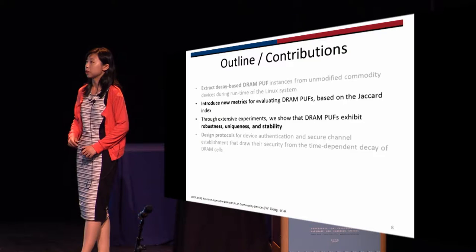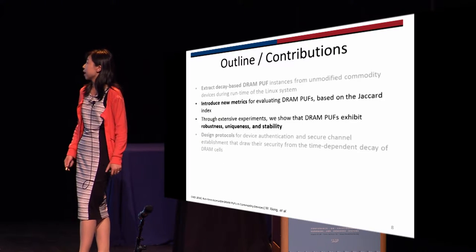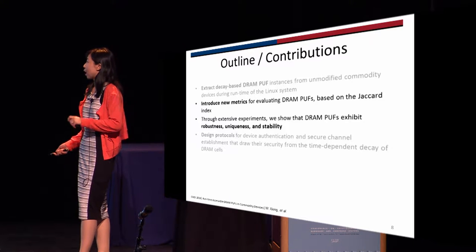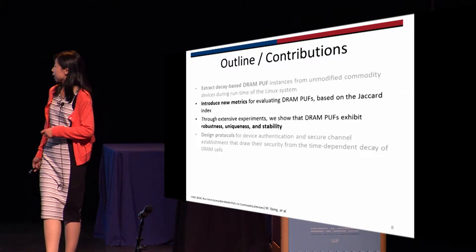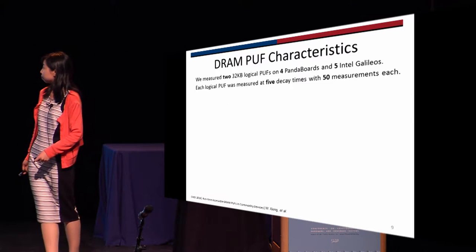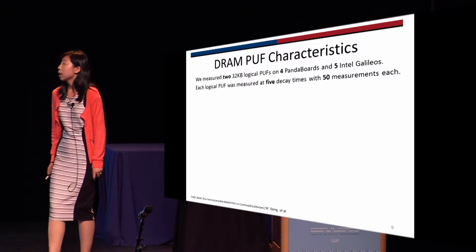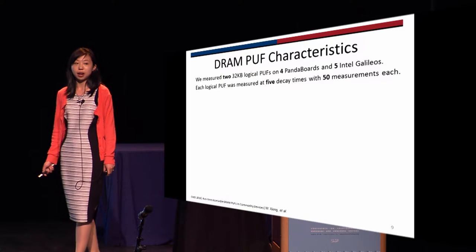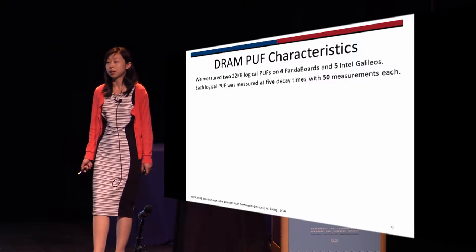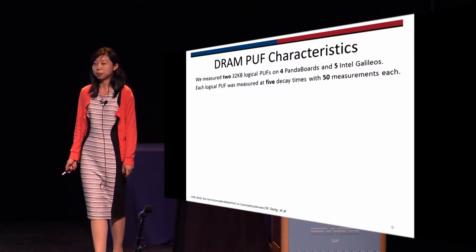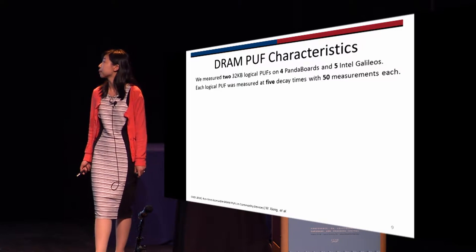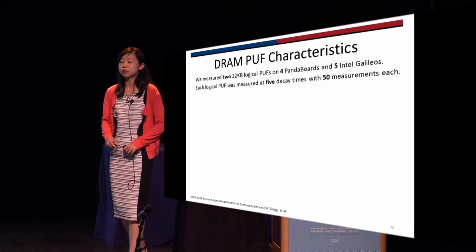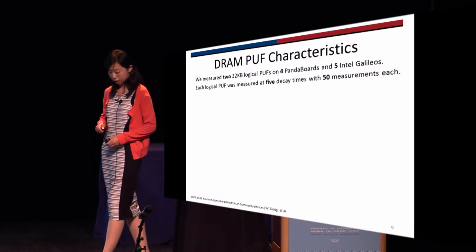Using these implementations, we conduct a lot of experiments and based on that we introduce new metrics. In total, we measure four PandaBoards and five Intel Galileos. On each device we measure two logical PUFs; each logical PUF is 32 kilobytes. For each logical PUF, we measure at five different decay times with 50 measurements each.